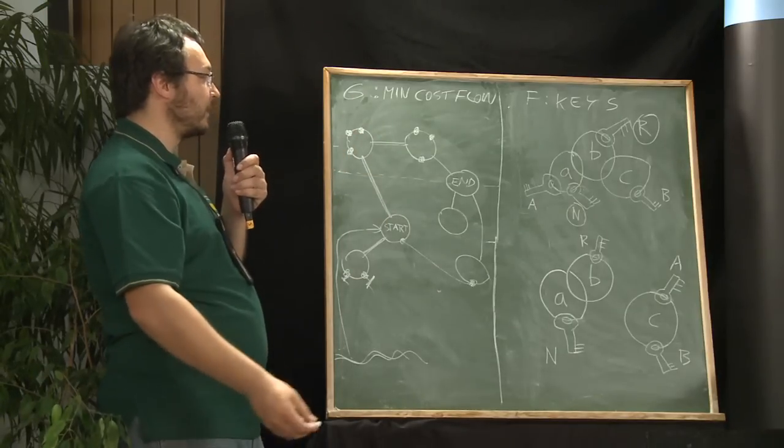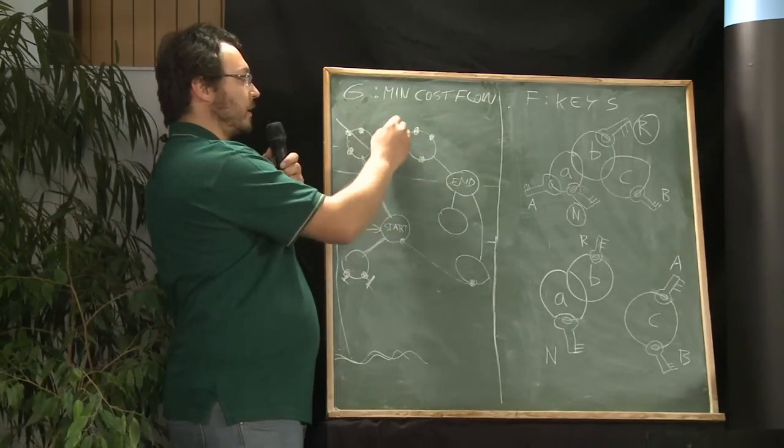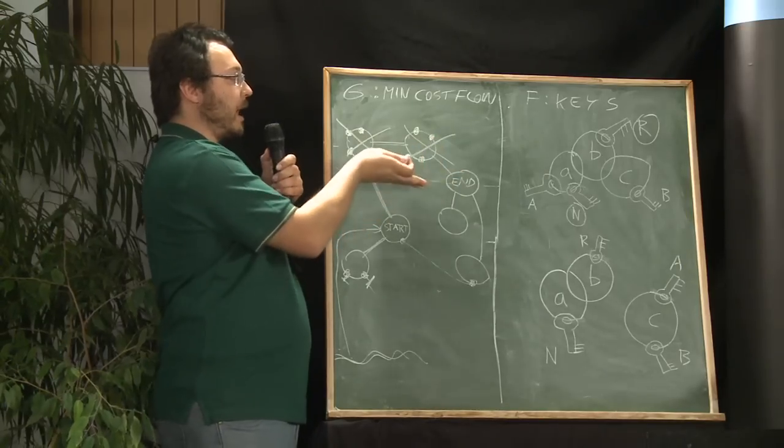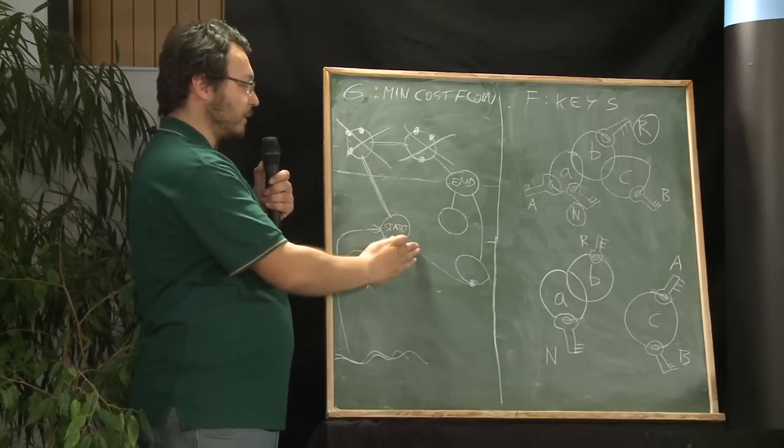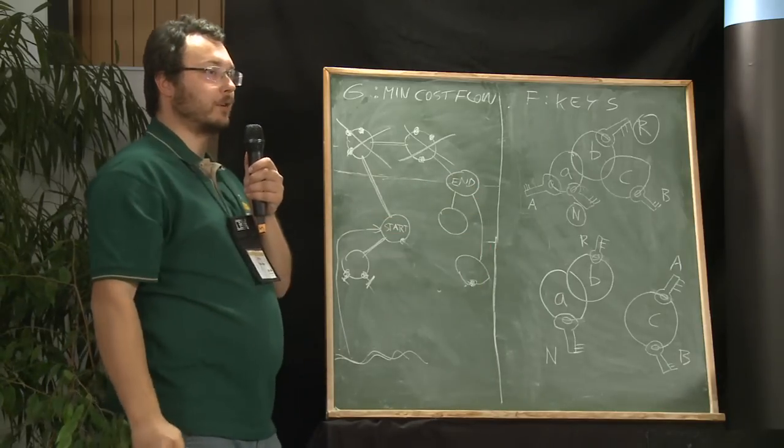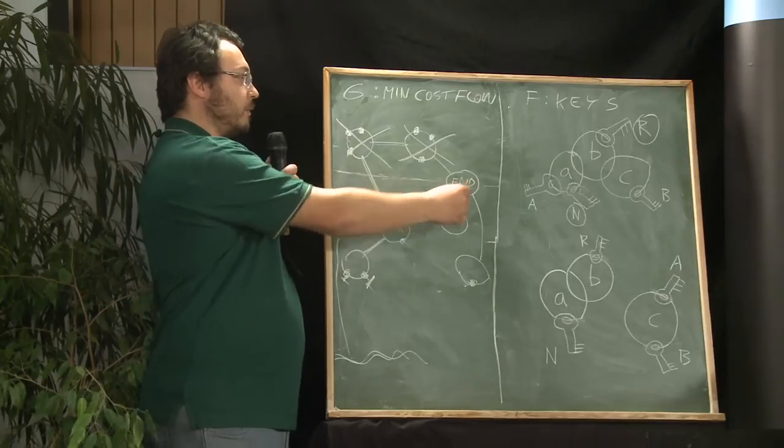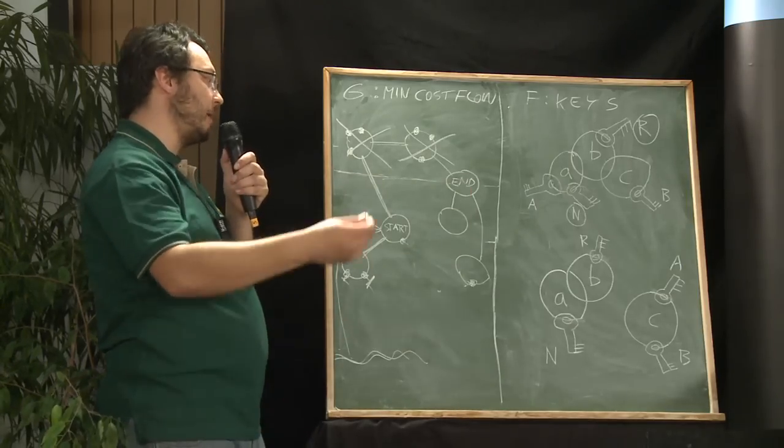So we can start by trying all possibilities for the water pressure. And now once we have fixed the water pressure, we can forget everything about this level. And what we will get is a set of connected components of the graph. And we are starting in one of them. We want to bring the water to another one or maybe the same one.